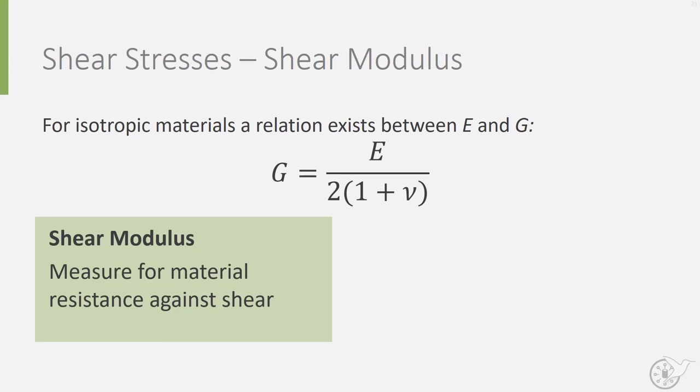And with isotropic materials, we mean materials that have identical properties in all directions. In practice, materials are often loaded by multiple load types.